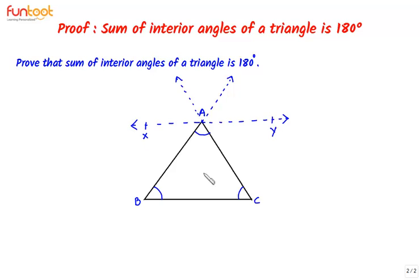Now XY is parallel to BC, and we take AB as the transversal. That means angle ABC is equal to angle XAB, as these are alternate angles.